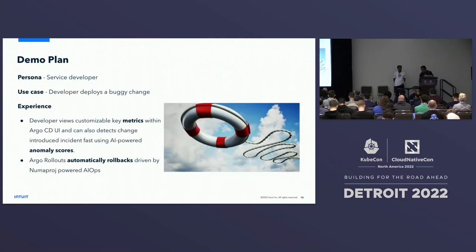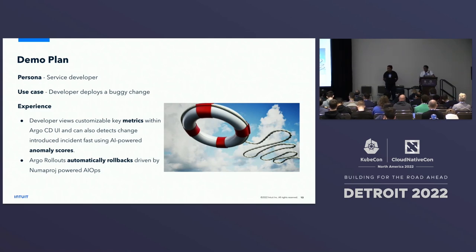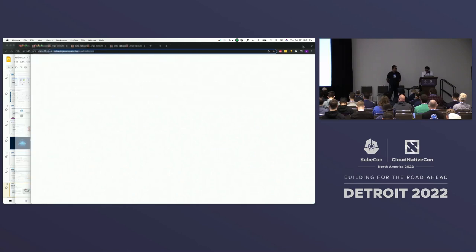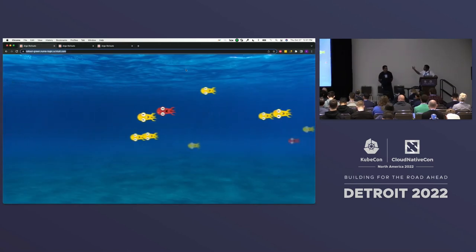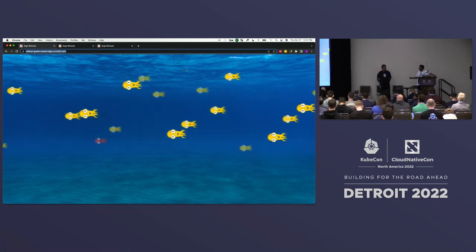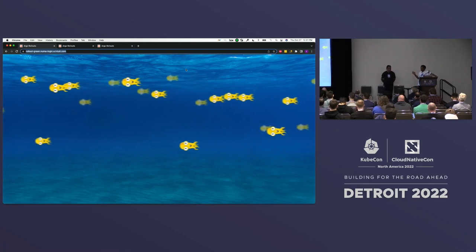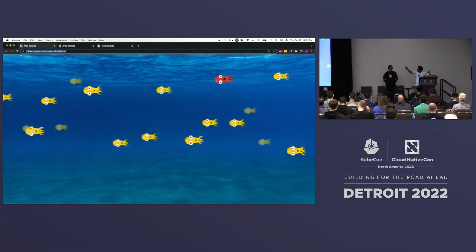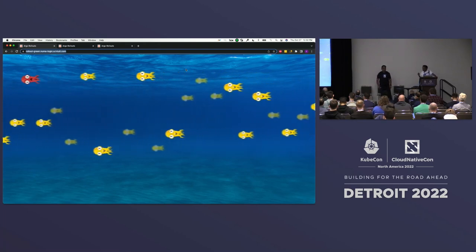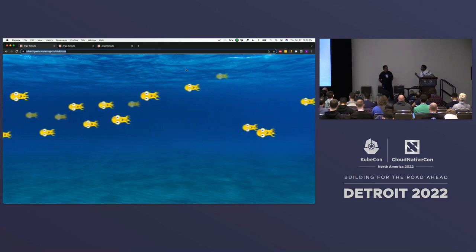Let me start off with the demo. The persona here is a service developer. I'm going to make a change that has a small bug inside it, and we will use the three features Amit talked about: the metrics we have integrated, the time series anomaly scores, and the automated rollback that rolls back and mitigates the problem. The demo app shows that when the browser renders, it talks to the backend, which gives you two things: the type of fish — here you see an octopus, which is version one — and the color of the fish. Yellow represents a happy state, meaning we are getting successful requests. Red represents an unhealthy response. The key thing is it's okay to have a few errors as long as it does not violate your SLA or SLO.